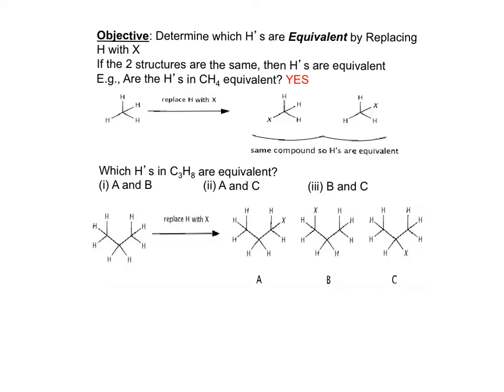Let's take a look at these two compounds and determine which protons are equivalent. We can do this trick by replacing H with an X. If the two compounds are the same, that means each H is equivalent. With the methane molecule, I've replaced one H with an X and then replaced the second H with an X. Note that these two compounds are equivalent, therefore all those H's are equivalent.